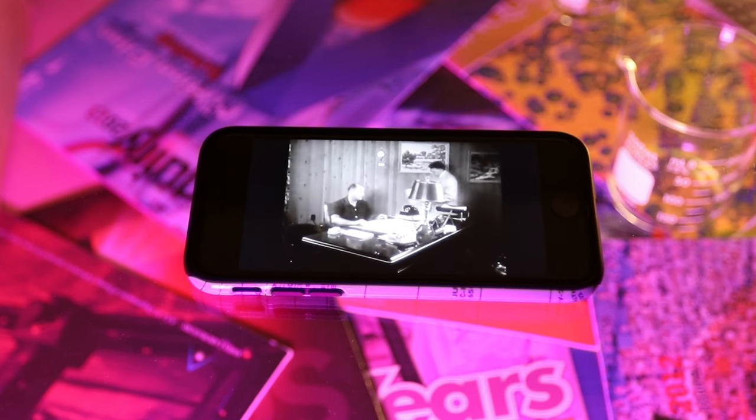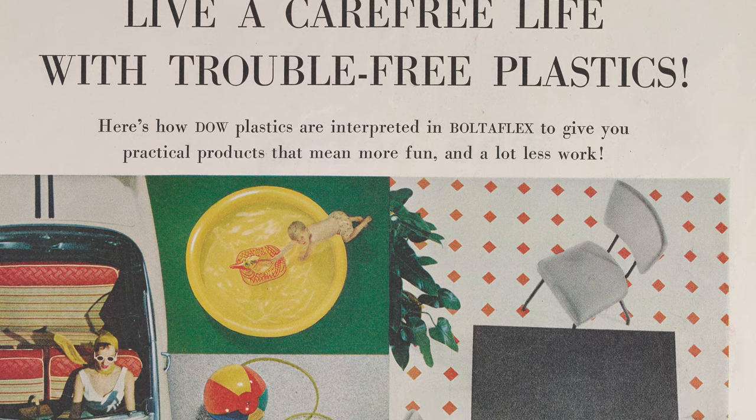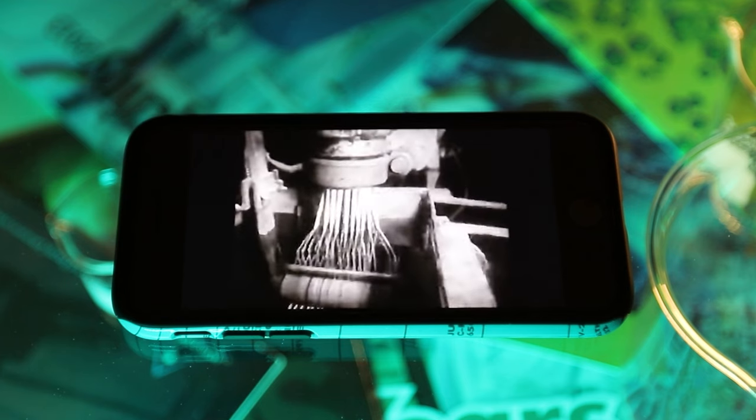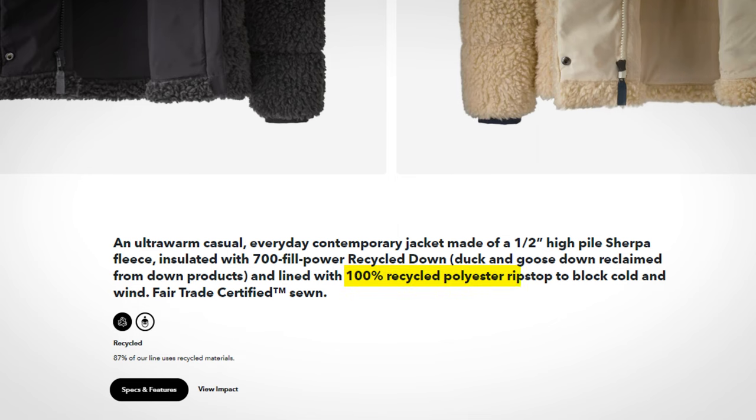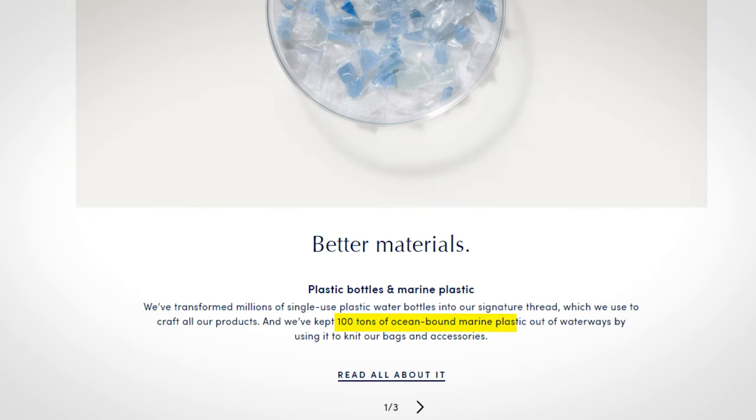Plastics were a revolutionary new material in the 1950s, but that very same plastic still exists today because it can take a hundred years or more to degrade. Even when it is recycled, it's turned into less valuable materials, a process that's more accurately called downcycling.